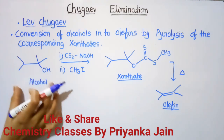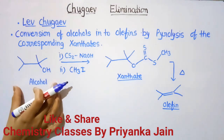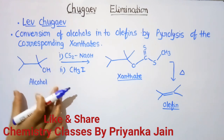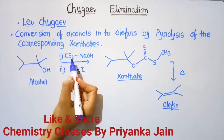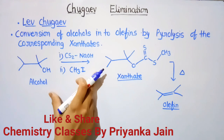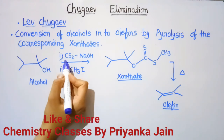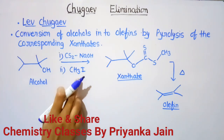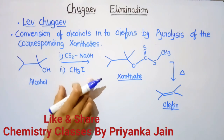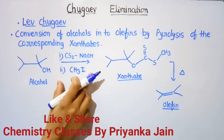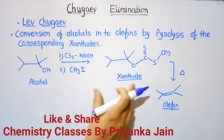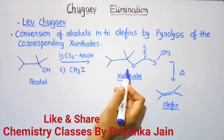What is the first step in the Chugaev Elimination Reaction? The alcohol is firstly reacted with an aqueous solution of NaOH or KOH, then with carbon disulfide, and then it is treated with methyl iodide. As a result of this procedure, we get the xanthates — the alcohol is converted into the corresponding xanthate.